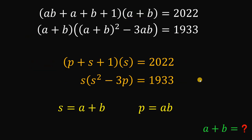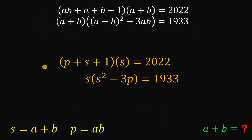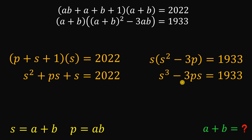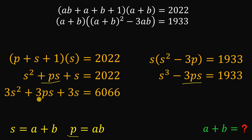Let's focus on these two results. Distributing s into (p + s + 1), the first equation becomes s² + ps + s = 2022. The second equation becomes s³ - 3ps = 1933. To answer this, we need to eliminate the unnecessary variable p. We multiply the first equation by 3 to get 3s² + 3ps + 3s = 6066.